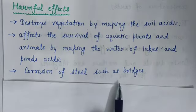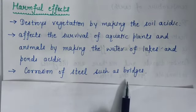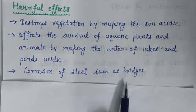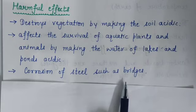The reason for forming acid rain is air pollution. The harmful gases like sulfur dioxide and nitrogen dioxide, which are released from industries and factories, are responsible for acid rain. These are the effects of air pollution.